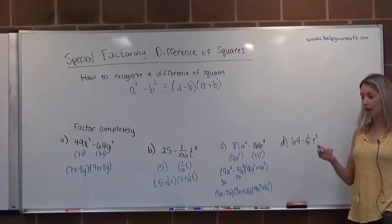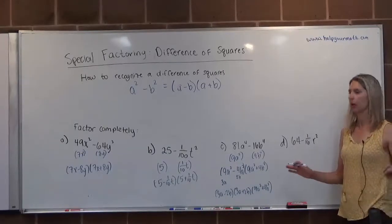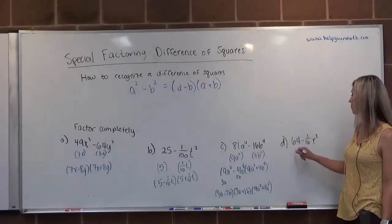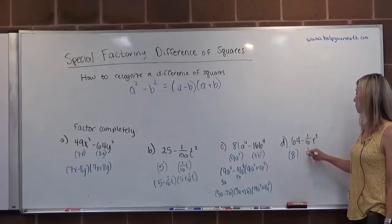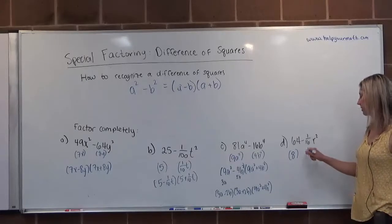Lastly, oh no, another fraction. But we already know how to handle this, so we're not worried at all. Let's see, 64, that's perfect square, is 8. 1 is 16, so 1 is 1 and 16 is 4. And then r squared, the square root is r.